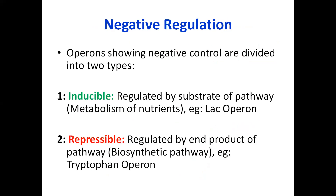We will take negative regulation first, then positive regulation. In negative regulation, if there is a protein on the operator, there is no transcription. For transcription to take place, that regulatory protein needs to be removed. The negative regulation has two types: one is inducible, and the other is repressible. The inducible type of gene regulation is regulated by the substrate of the pathway.